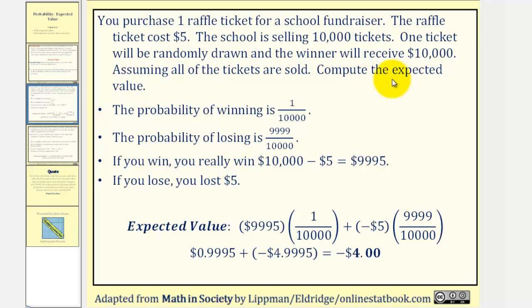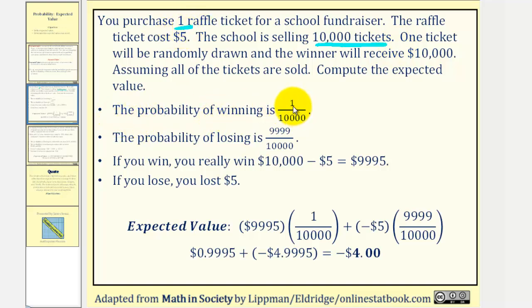The expected value would be the expected outcome if you played this lottery over and over again. There are 10,000 tickets and you only purchase one, therefore the probability of winning is 1/10,000. The probability of losing would be one minus the probability of winning, or 9,999/10,000.